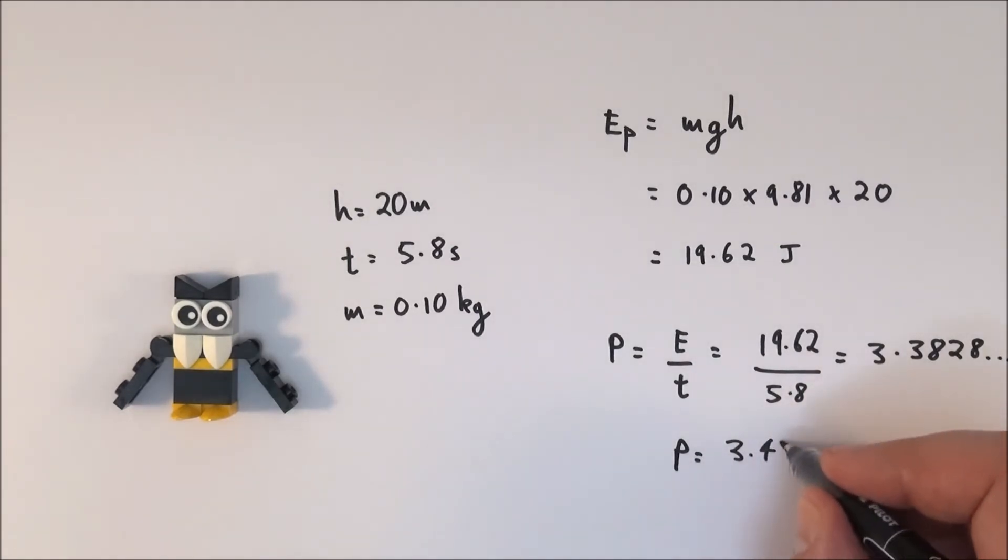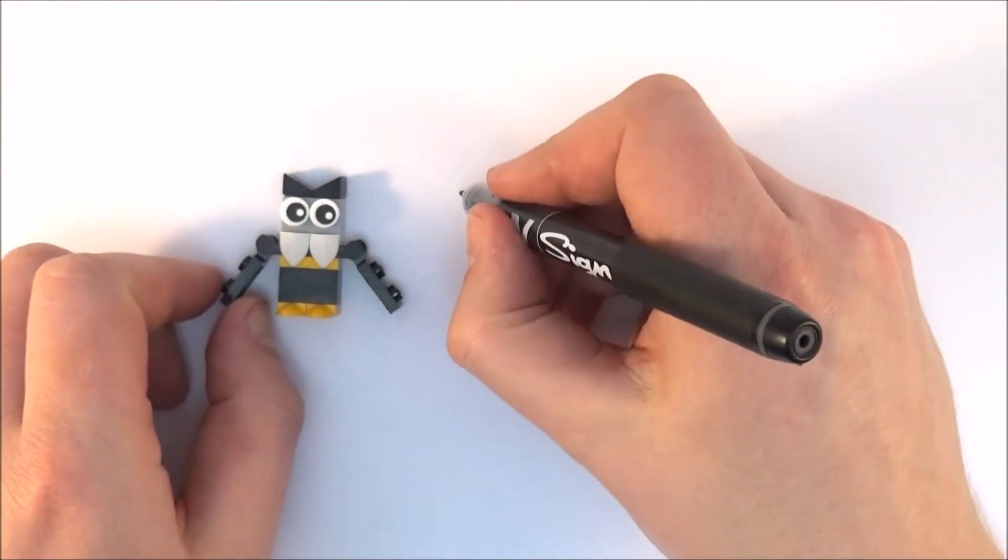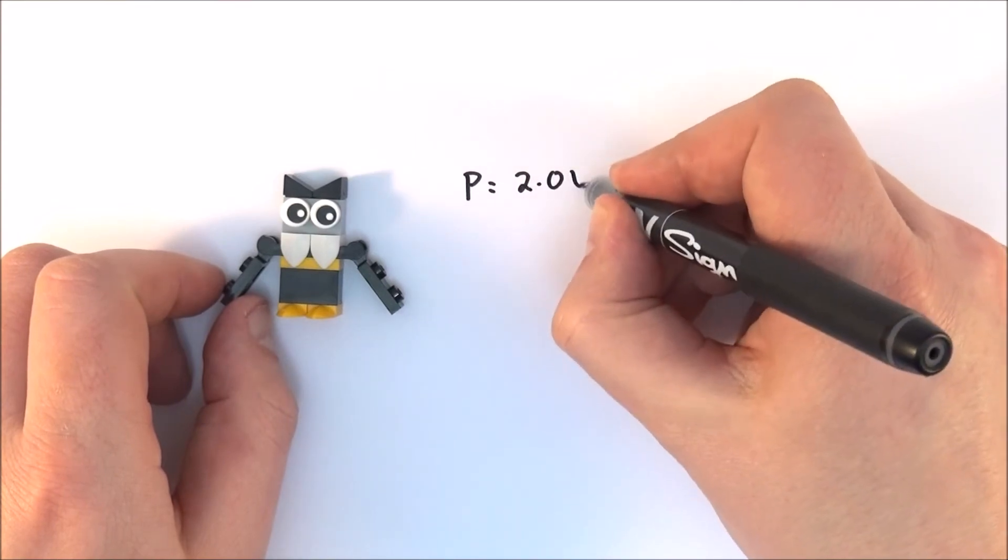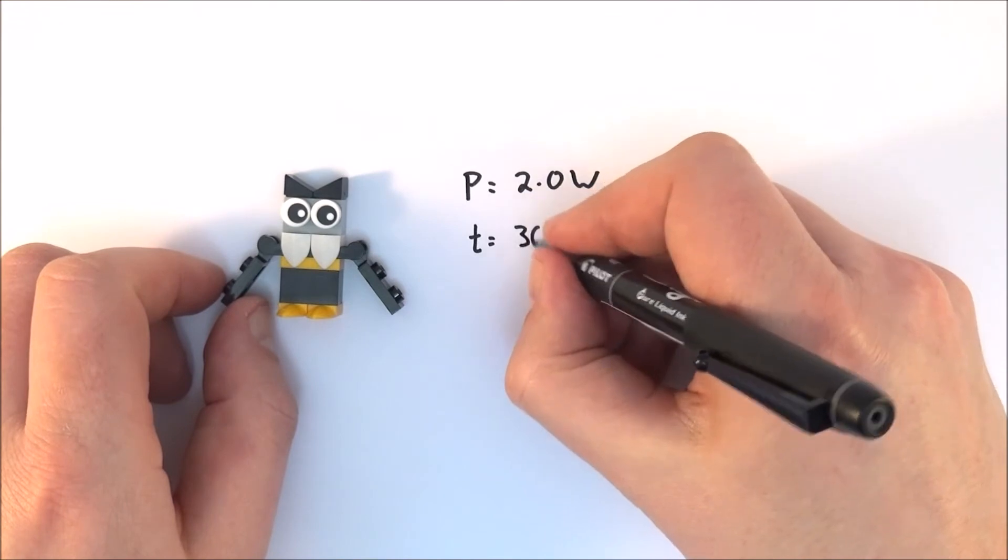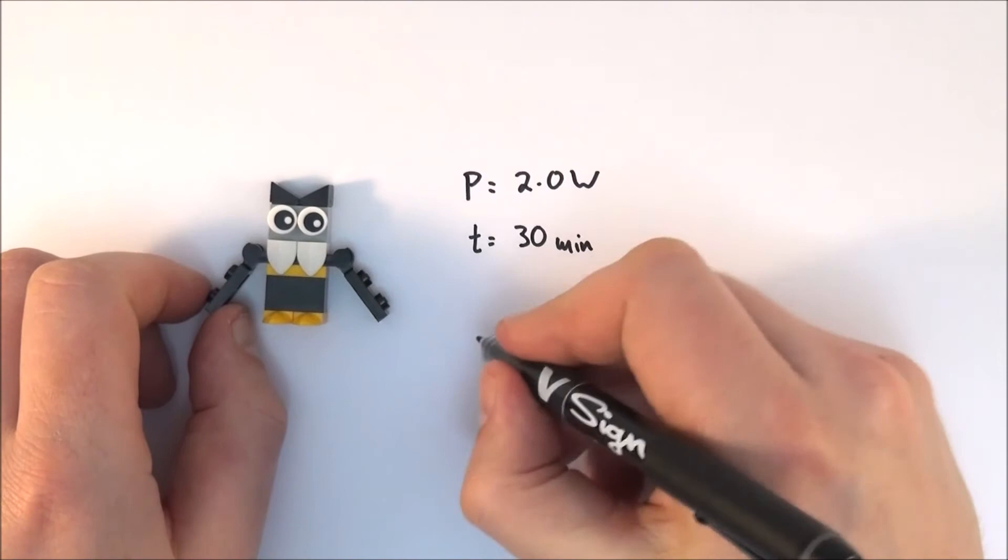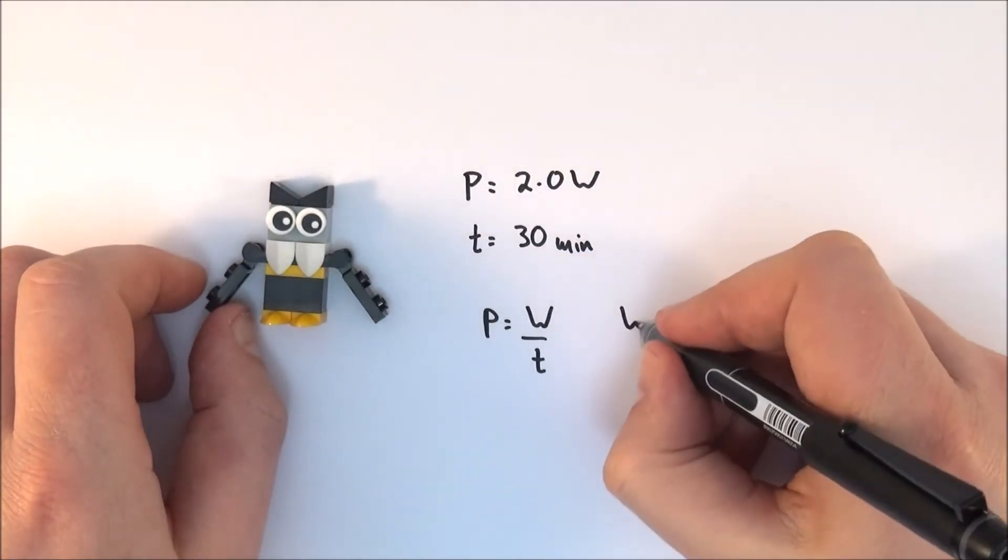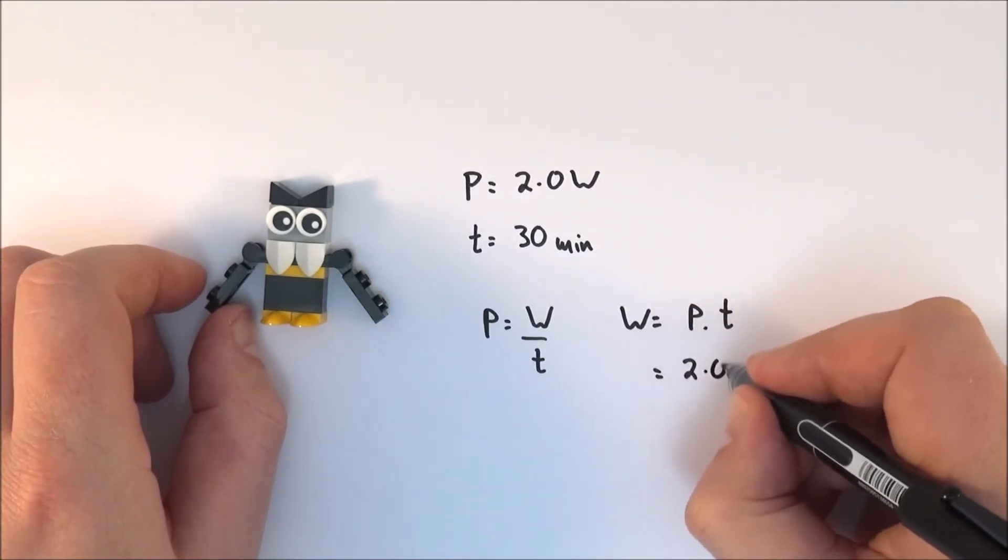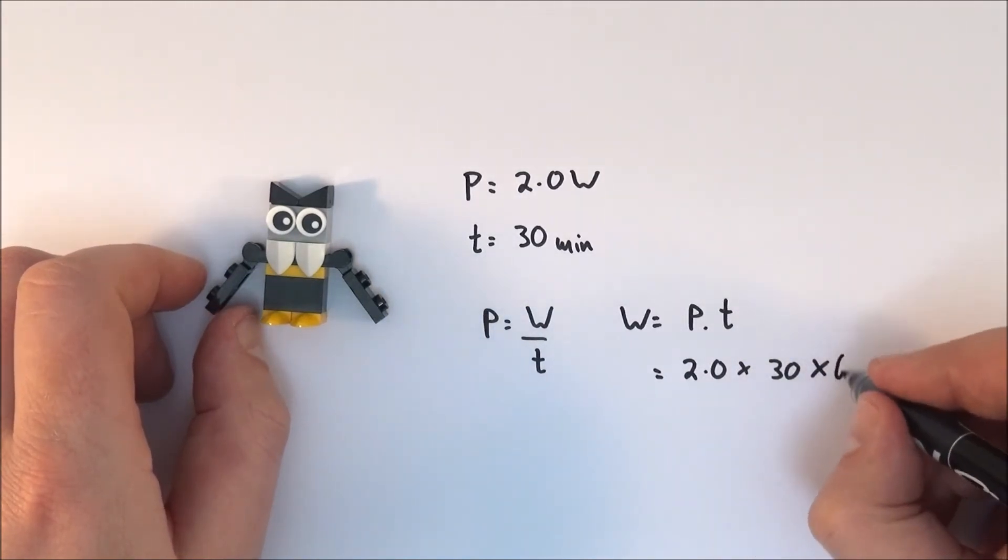Another example we could look at is maybe the work done by the bird. Perhaps it's got an average power output equal to 2.0 watts and the bird flies for a time of 30 minutes. So how much work does the bird do in this time? We can say that power is equal to the work done per unit time, so the work done is equal to the power times time. In this case, the power is 2.0 watts, the time is 30 minutes, and we've got to times it by 60 to get it into seconds.